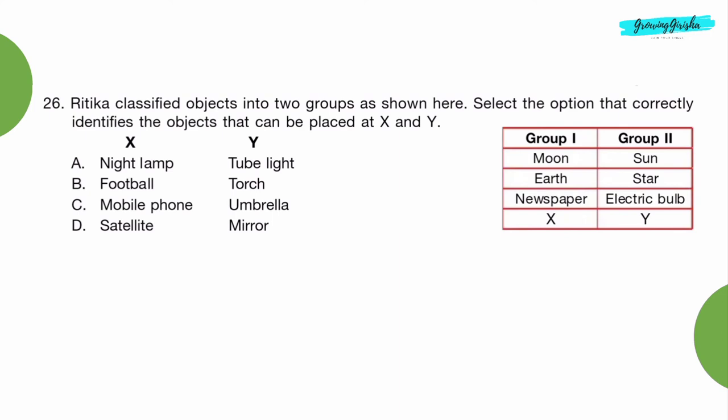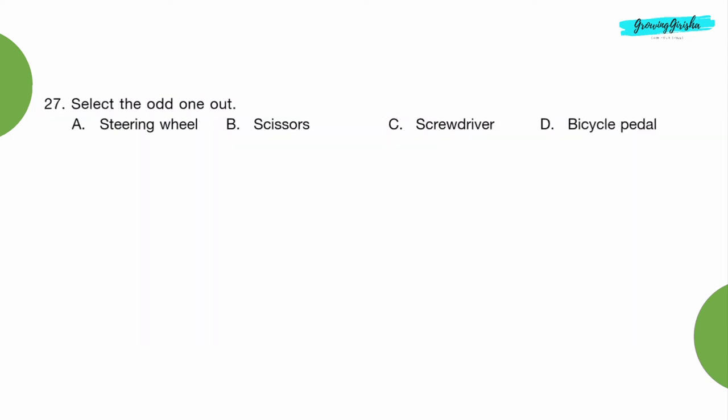Question 26: Hrithika classified objects into two groups as shown here. Select the option that correctly identifies the objects that can be placed at X and Y. Option B: X is football, Y is torch. Question 27: Select the odd one out. Option B: Scissors.